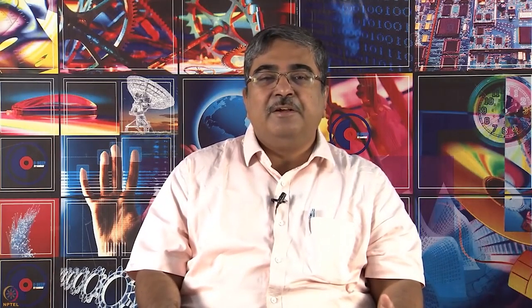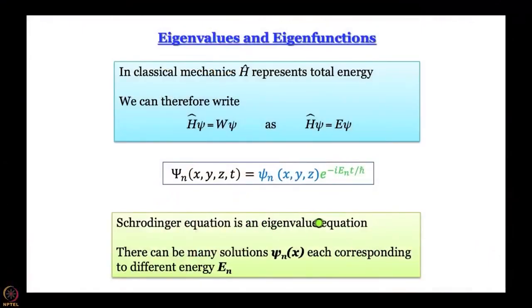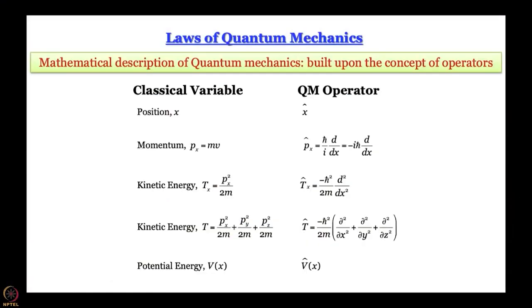We see that the Schrödinger equation is an eigenvalue equation. From this we arrive at the first postulate: for every classical variable or physical observable, there is going to be a corresponding quantum mechanical operator.